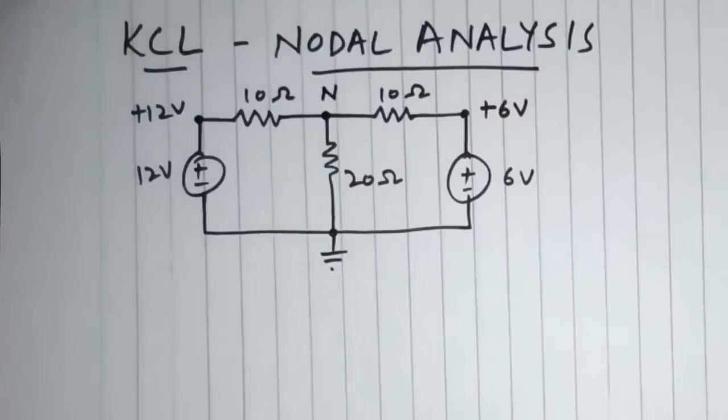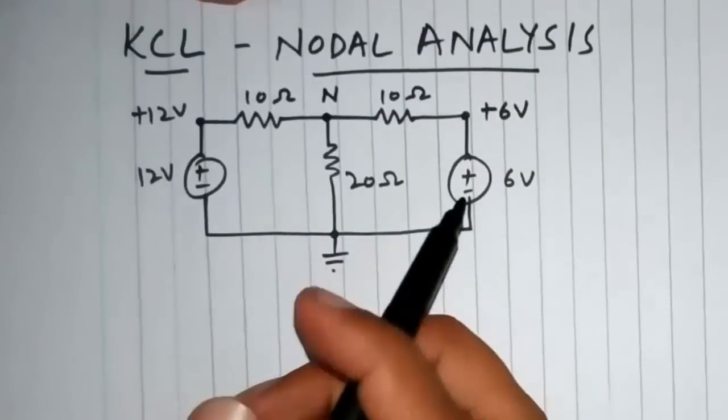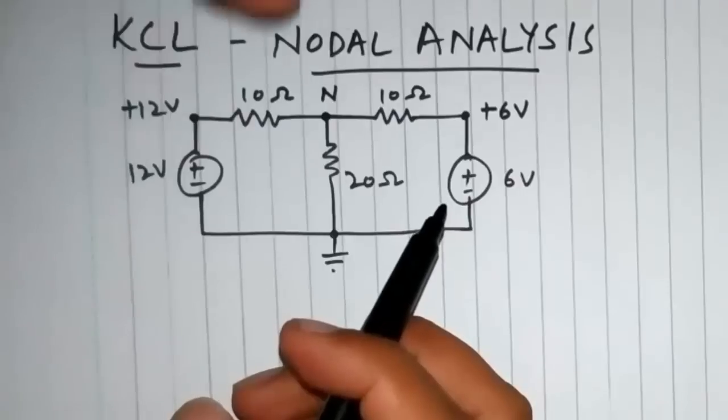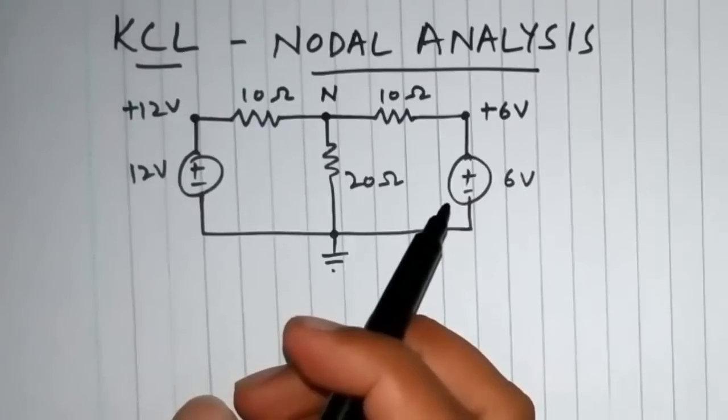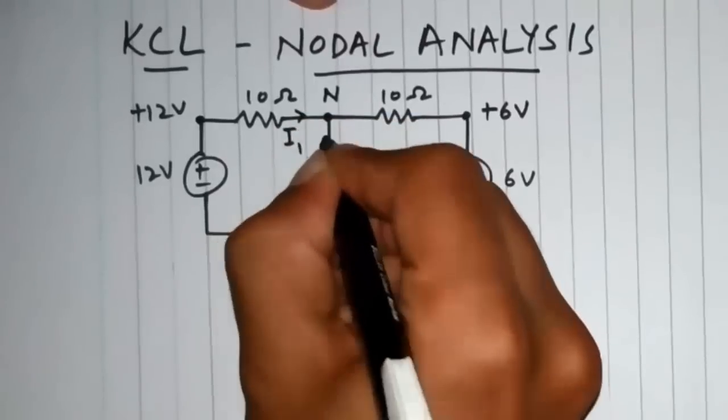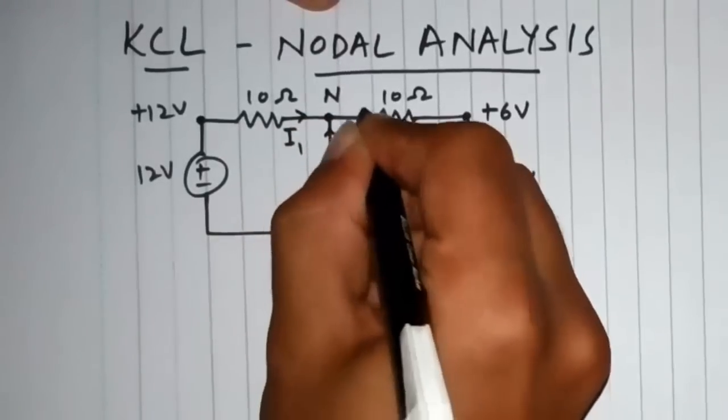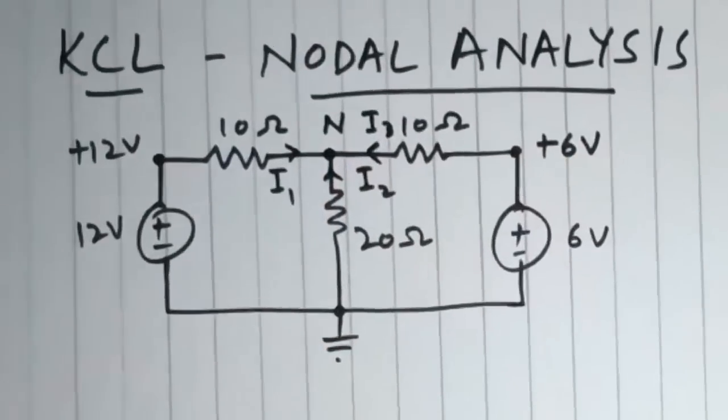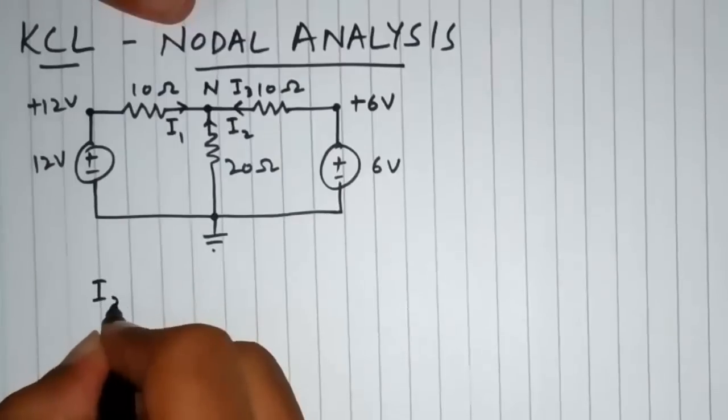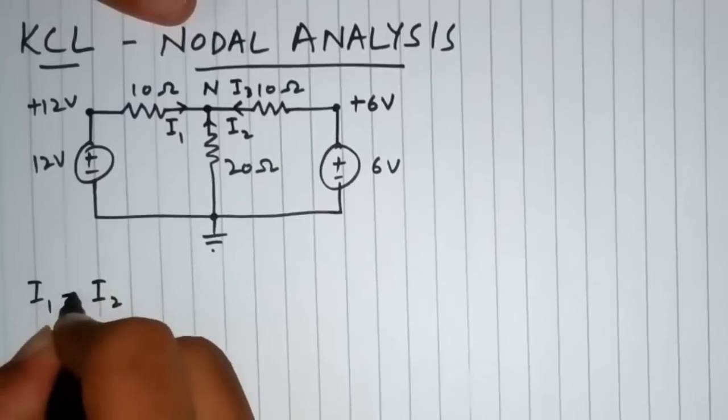For applying KCL, we need the direction of all the currents in this circuit either flowing towards or away from the nodes. Let's assume all the currents are flowing towards the node. Now KCL says that the sum of all the currents into or out of the node is equal to zero.